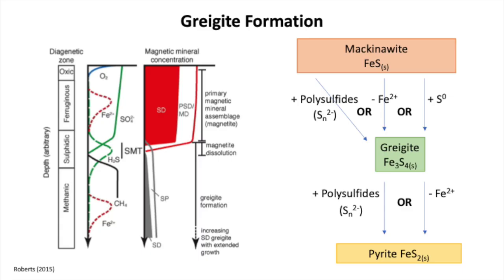Now for some ongoing work, just submitted yesterday, about gregite formation. The idea is that while we're dissolving magnetite, we could also be forming gregite. Many people dealing with sedimentary records struggle with this — gregite showing up messes up magnetostratigraphy. The actual process by which it happens is really poorly understood; there's a ton of hypotheses. There are also arguments about the stability of gregite — whether it's stable over long periods of Earth history or whether it will transform to pyrite almost immediately.